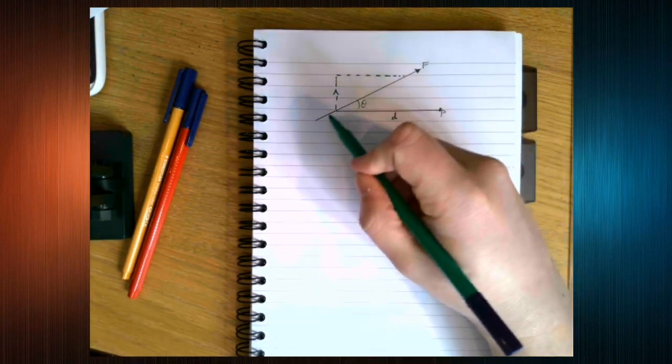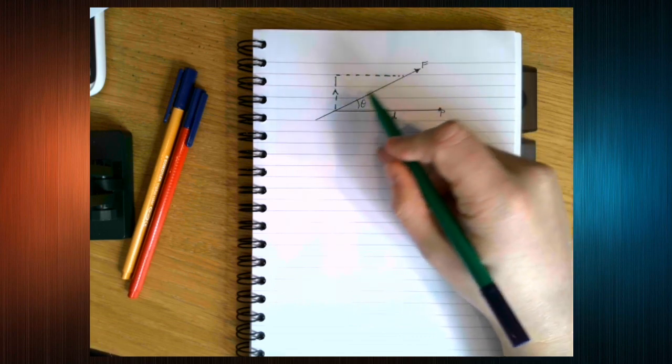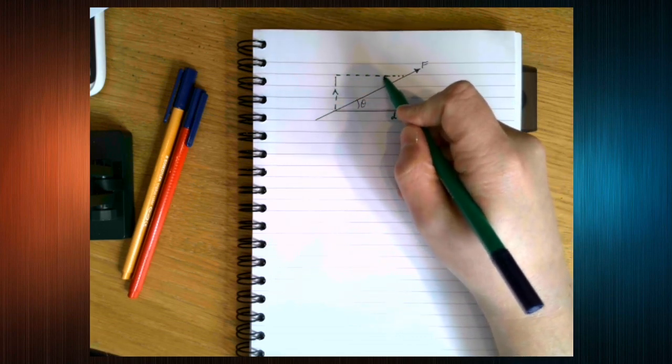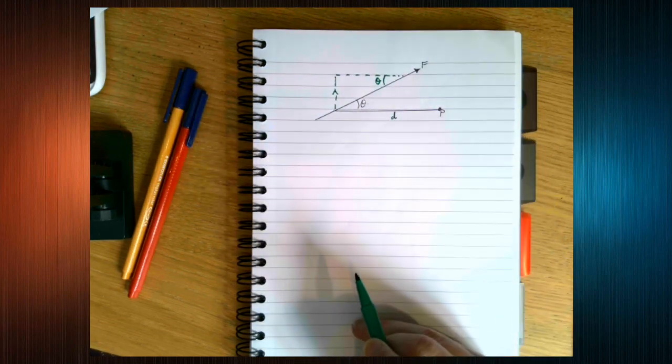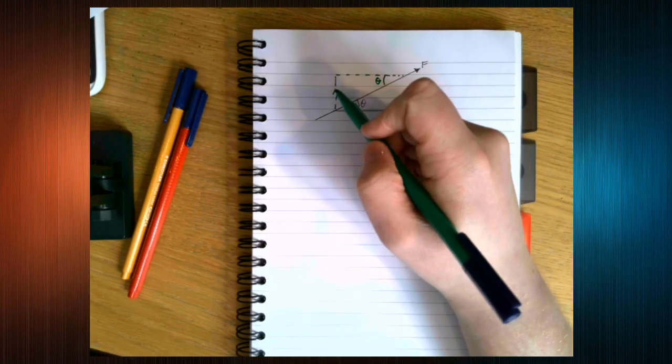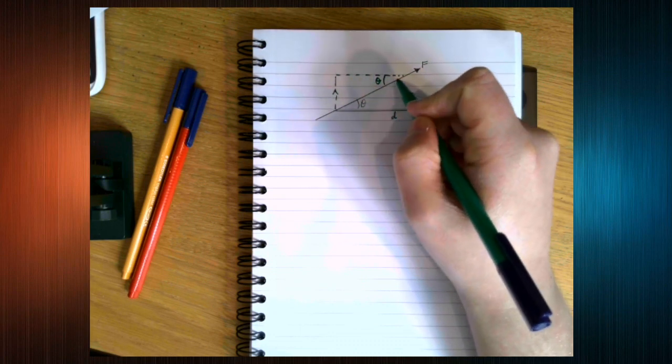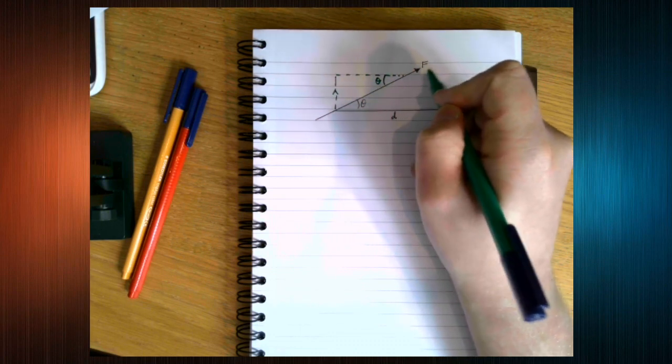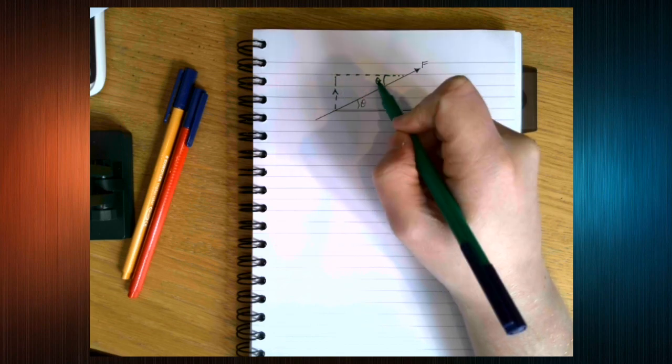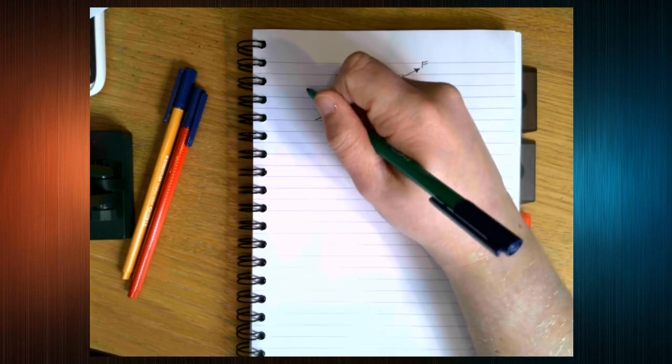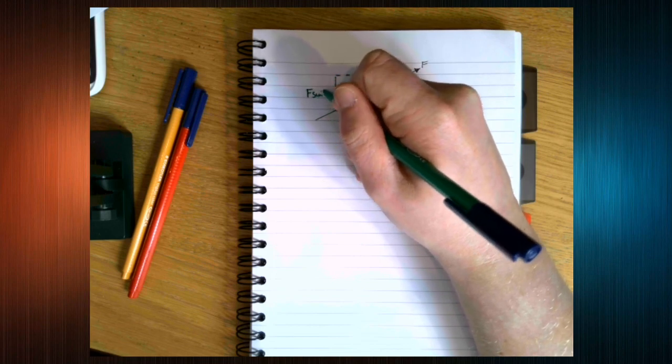Now, because of, and we've got our z here, this here is also theta. Again, because of Pythagoras, this is the hypotenuse. This is F because we know the force. This is our angle. We have the opposite force. So this is F sin theta.